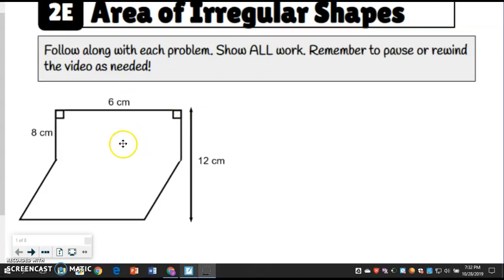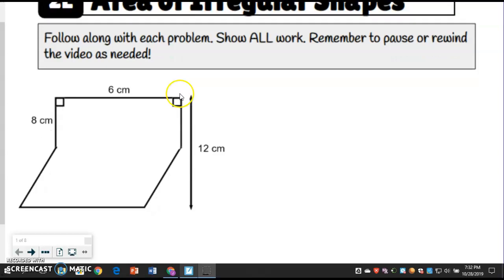We have this kind of funky looking shape right here. What I try and do is I try and make familiar shapes out of the shapes I see here. I can very easily draw a line across here, you can do a solid line or a dashed line. When I do that, it creates what we call a rectangle here and then a parallelogram down here. We know how to find the area of those shapes. Keep in mind, these are not drawn to scale. We're just going to go off the measurements that they have here for us.